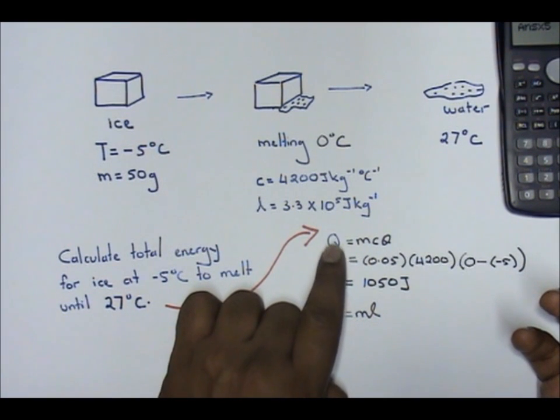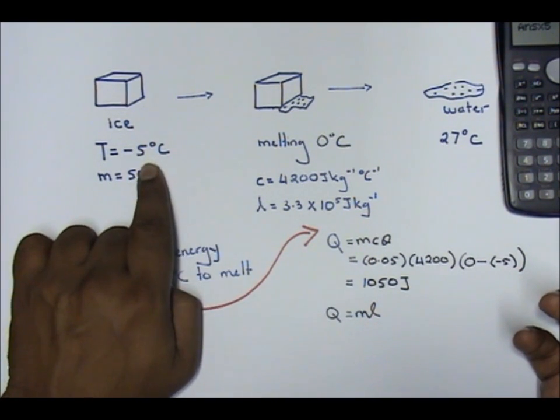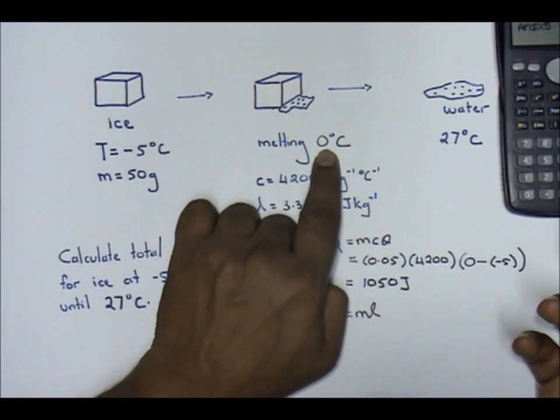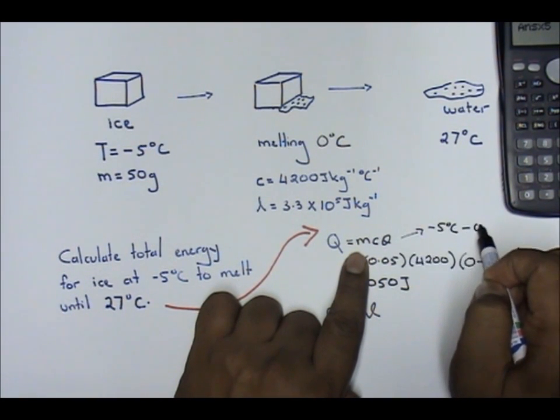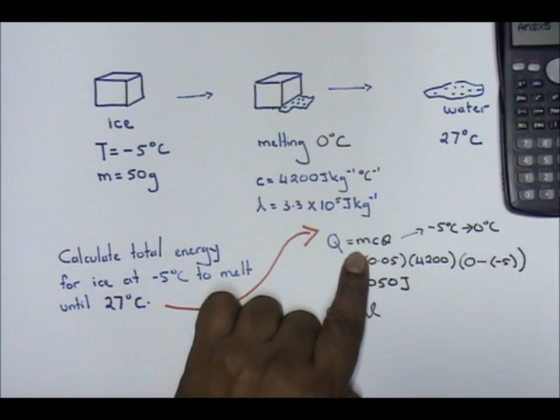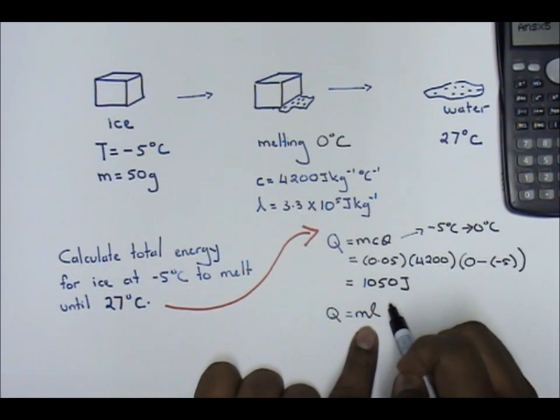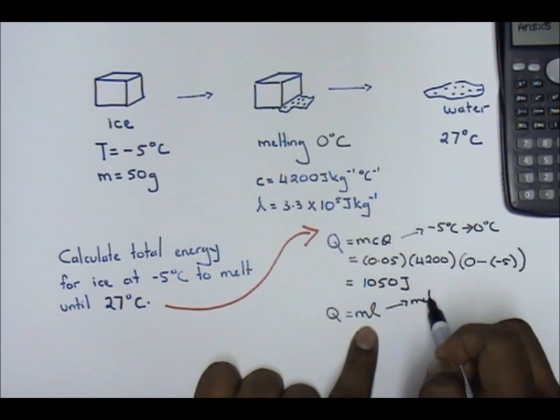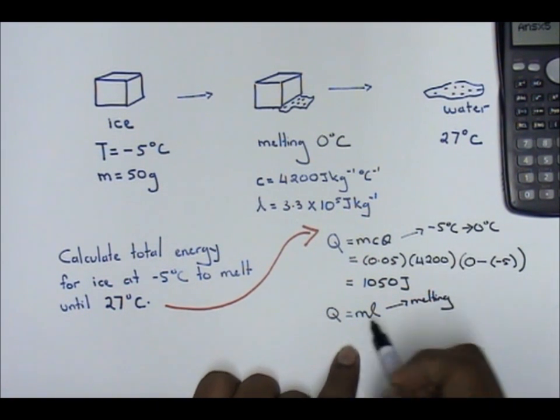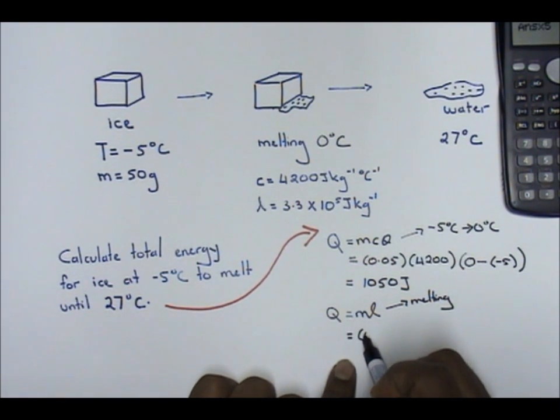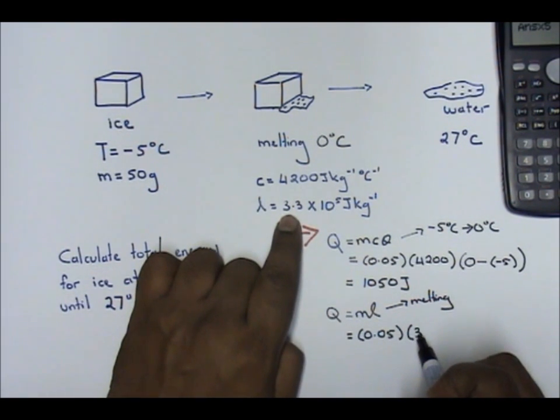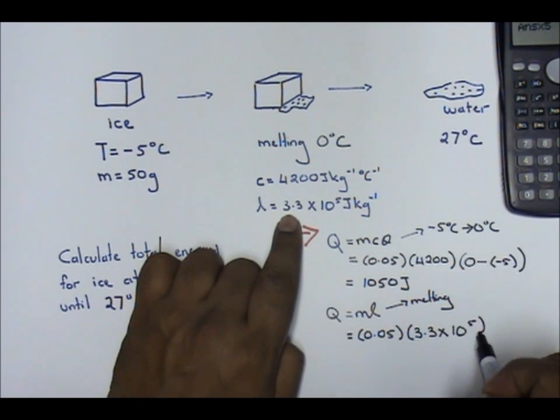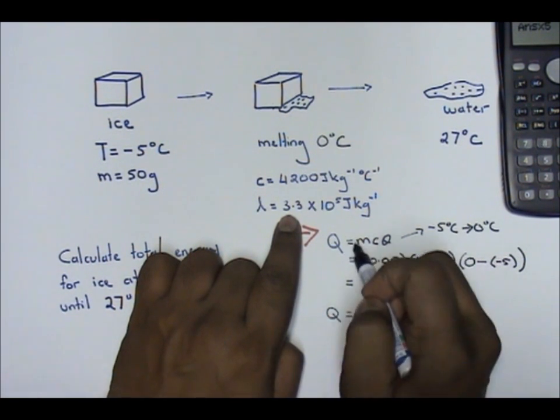This one, how much energy it needs for ice to change from negative 5 to 0. You saw the difference? This one, negative 5 degrees to 0 degrees, how much heat is needed. This one, how much heat is needed for melting. Your M is 0.05. Your L is given to you as 3.3 times 10 to the power of 5. I'll put this as Q1, Q2.